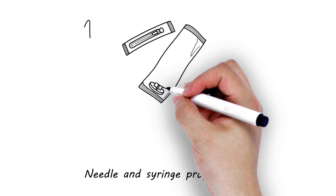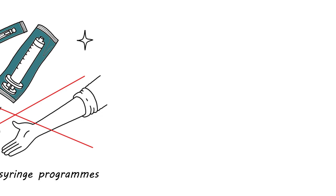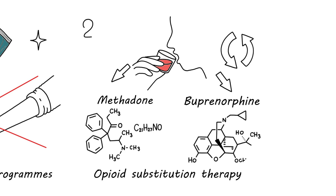Needle and syringe programs promote the use of clean needles and syringes and reduce sharing of injection equipment. Opioid substitution therapy includes the most common medicines like methadone and buprenorphine.